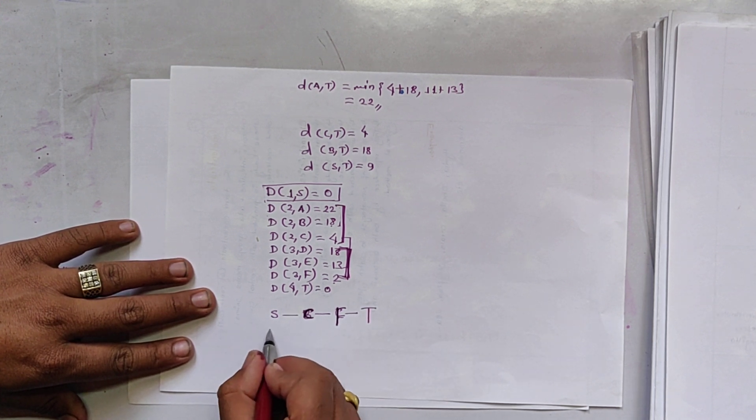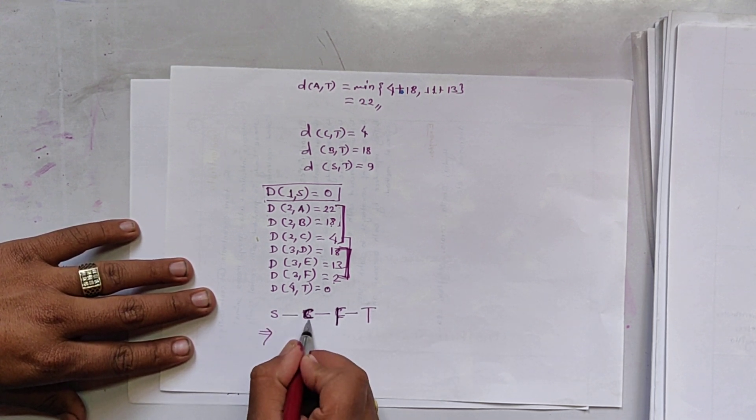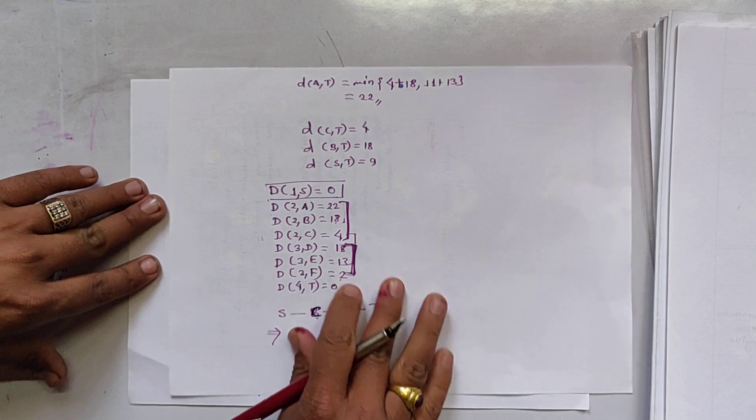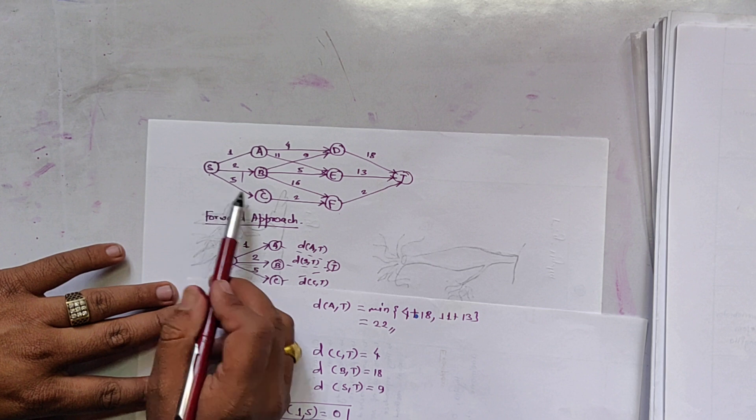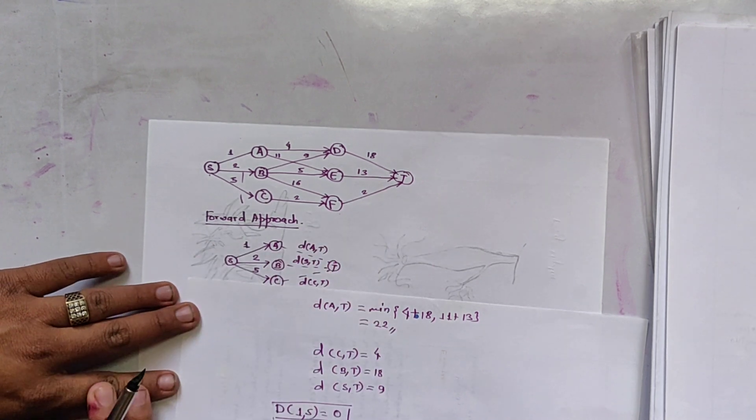So the shortest path is S to C, C to F, and F to T. Let us see. S to C, C to F, and F to T. And it is 5 plus 2 plus 2 is 9.